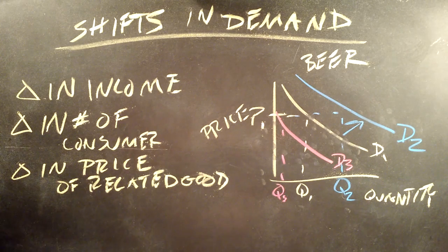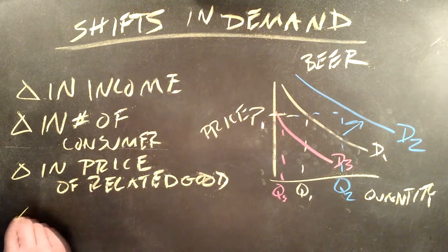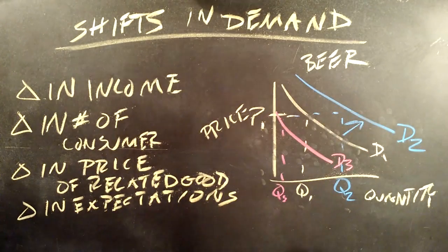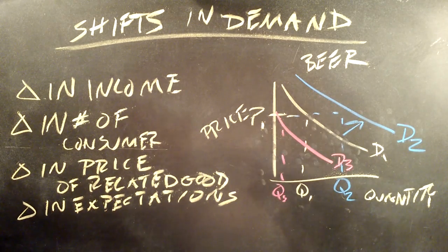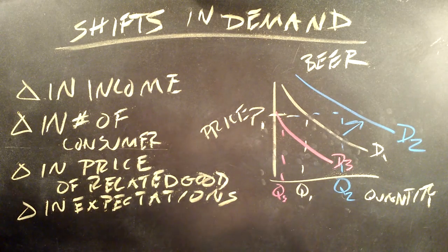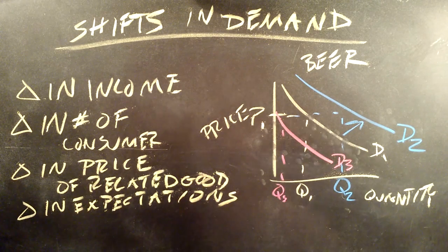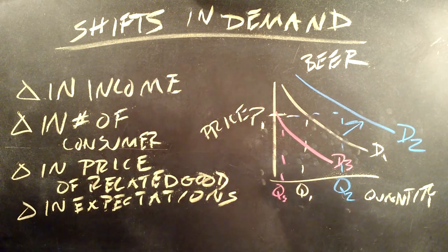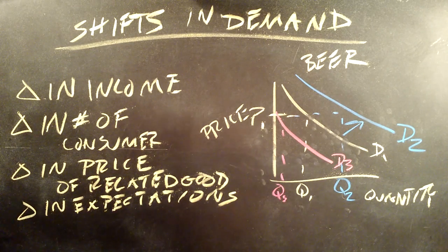Another reason for the demand curve to shift is the change in expectations. If we had the market for, let's say, a cell phone or a TV, in the week leading up to Black Friday, we would think maybe the price of that TV or that cell phone that I was looking to buy might go down as a Black Friday deal.